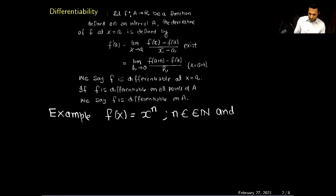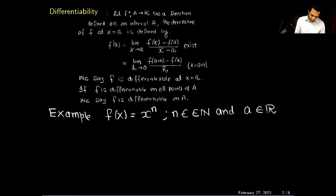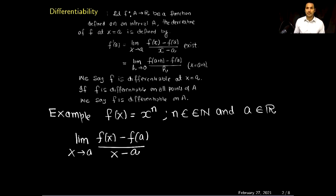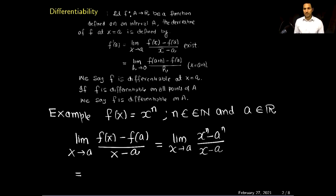Let a belong to the set of real numbers. My goal is to prove F(x) is differentiable at x = a, or in other words, I want to show that the limit as x approaches a of F(x) minus F(a) divided by x minus a exists. This limit equals x^n minus a^n divided by x minus a.